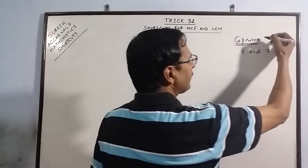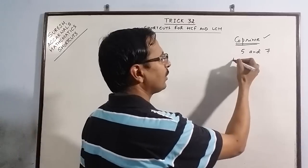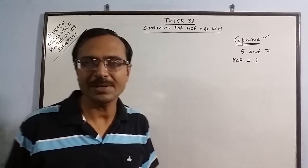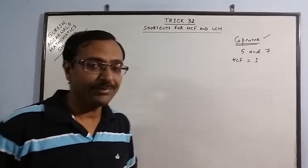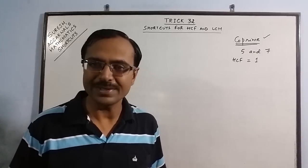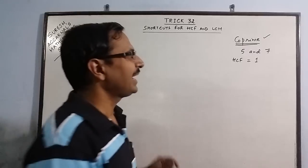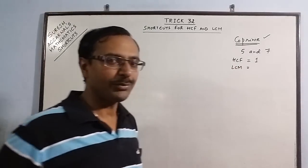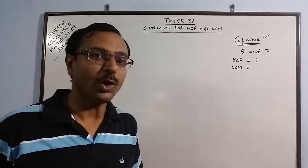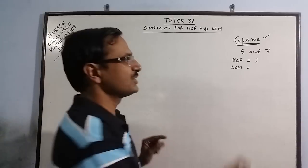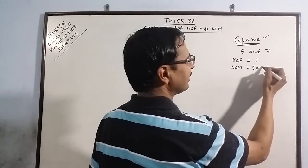In these co-prime numbers the highest common factor is always one. So the first concept for today is if we see two co-prime numbers their HCF is always one. And simultaneously LCM of two co-prime numbers is always equal to their product. So LCM is 5 into 7, 35.